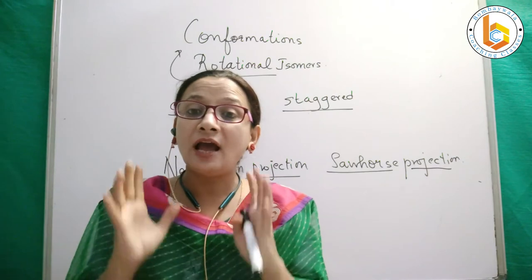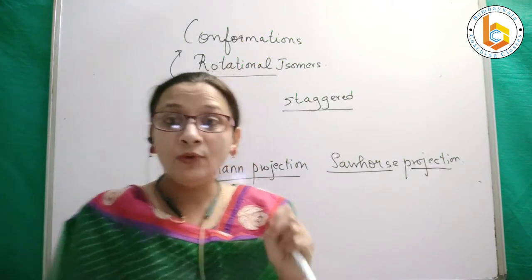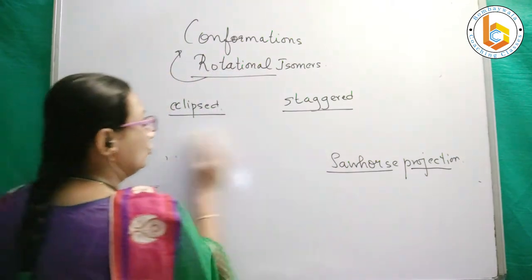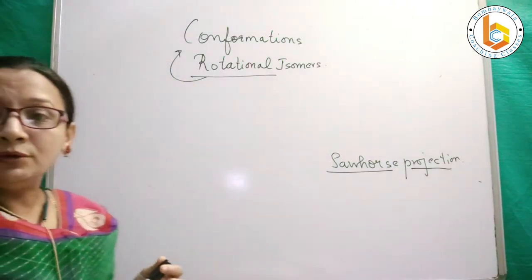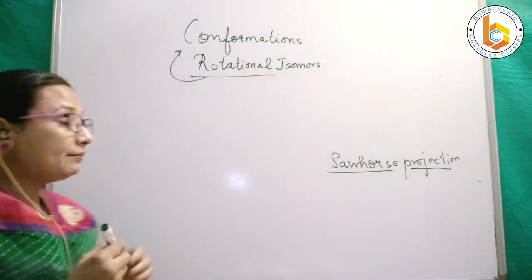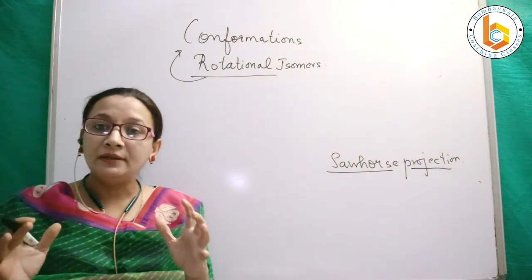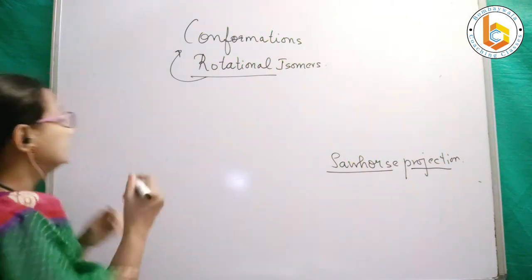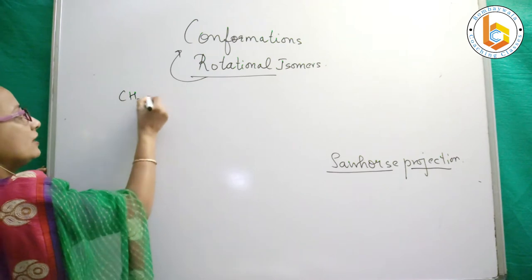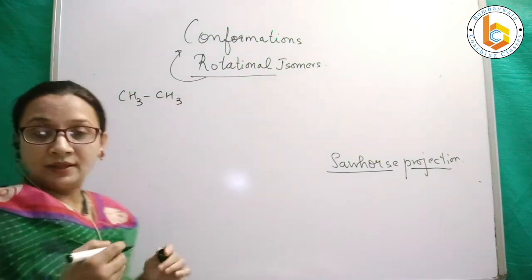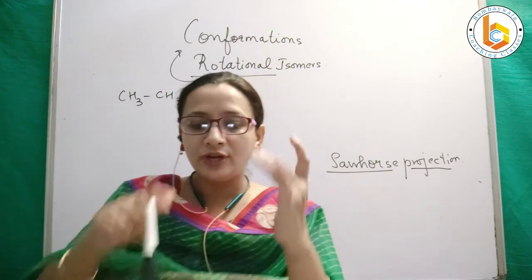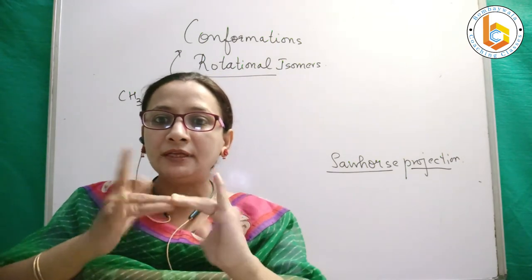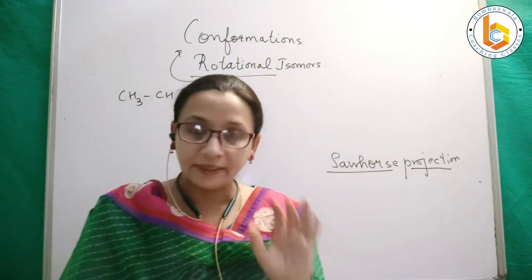Let us see how Newman projection will look. In the Newman projection, for example, I am talking about the simplest example, that is ethane. This is CH3 and this is another CH3. That means I have two carbons and six hydrogens, and rotation is occurring between the carbon-carbon single bond.